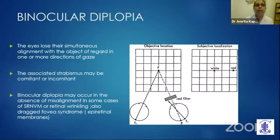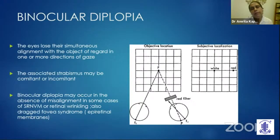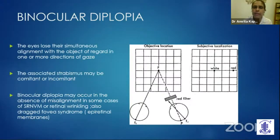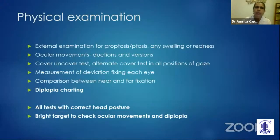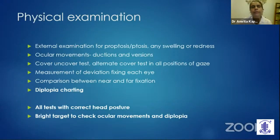In binocular diplopia, the eyes lose their simultaneous alignment with the object of regard in one or more directions of gaze. However, very rarely, even in the absence of misalignment, if a patient complains of binocular diplopia, we should look at the retina for retinal wrinkling or a dragged fovea syndrome. After taking a thorough history, we go on to the physical examination.